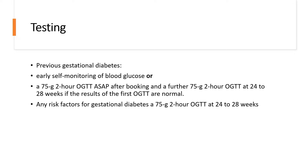Testing is recommended for anyone who has had previous gestational diabetes. Early self-monitoring of blood glucose can be recommended, or an oral glucose tolerance test should be done as soon as possible after booking — in the first or second trimester. A further GTT should be done at 24–28 weeks if the first GTT result is normal. Anyone with risk factors such as BMI over 30, family history of diabetes, or previous macrosomic baby over 4.5 kg should also be offered a GTT at 24–28 weeks.